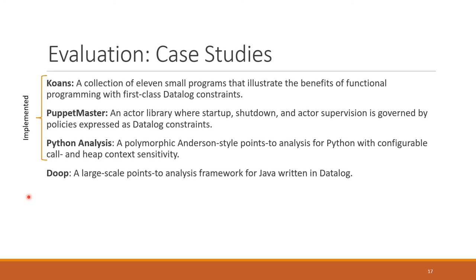So to evaluate this work, we considered four case studies. The first three are things we've implemented. So one was these koans, collections of small programs that show that Datalog programs and functional programs work well together. Then Puppet Master, which is an actor library, where the startup, shutdown and actor supervision policies are expressed as Datalog constraints. And then a Python analysis, where we can configure the precision of the analysis by selective inclusion and exclusion of rules, and we can tune the context sensitivity. Finally, we considered Doop, which is a large-scale Datalog program, to see how they deal with this parametricity problem.